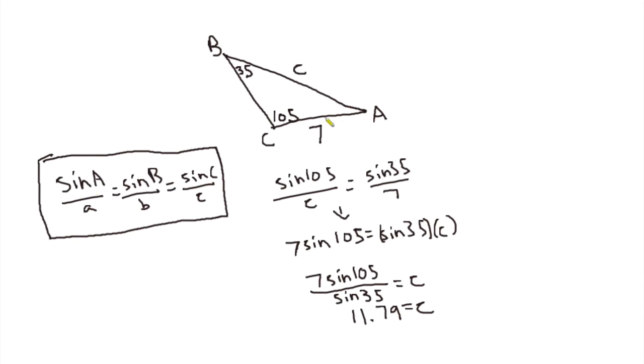And so sine of angle A over side A is equal to sine of angle B over side B, and is also equal to sine of angle C over side C.